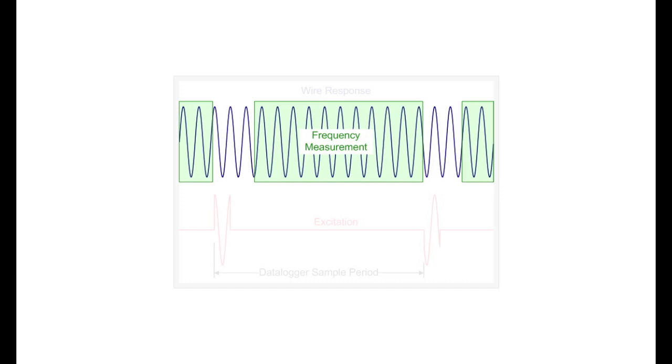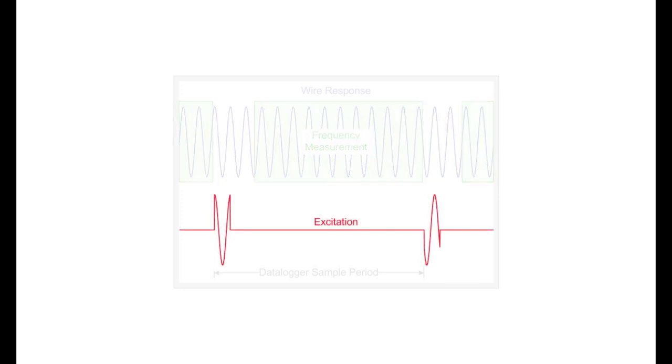The CDM VW300 is able to make dynamic measurements by maintaining the vibrating wire in a continuously vibrating state. At the beginning of each datalogger scan, the analyzer provides a short duration, low voltage excitation pulse that is phase aligned to the motion of the wire. This pulse adds constructively to the energy in the wire and sustains its motion.